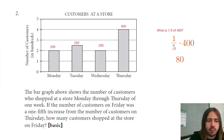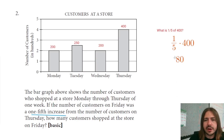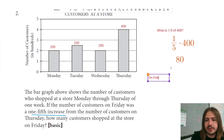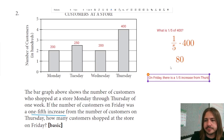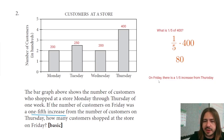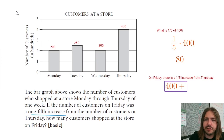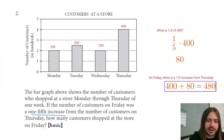Since we have a one-fifth increase, we're going to add the 400 from Thursday to the increase of 80. So on Friday there is a one-fifth increase on Thursday. We started with 400 and then we add the one-fifth increase, which is 80, and that gives us 480 customers.